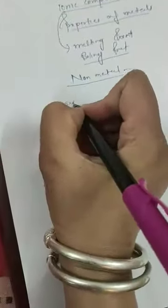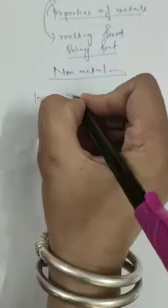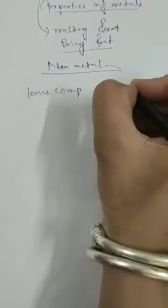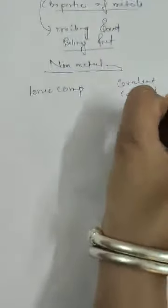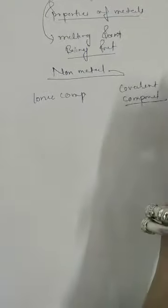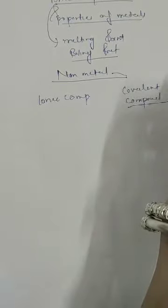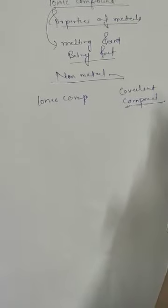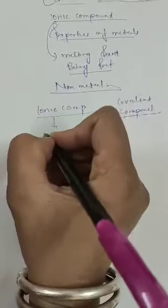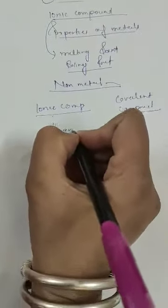Metals form ionic compounds, whereas non-metals form covalent compounds. Covalent compounds are not electrically conductive in nature, because ionic compounds are formed by the transference of electrons.